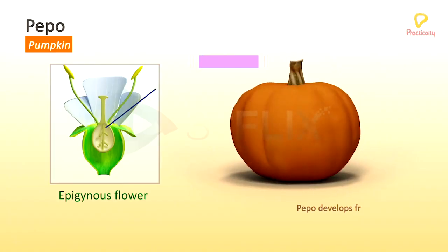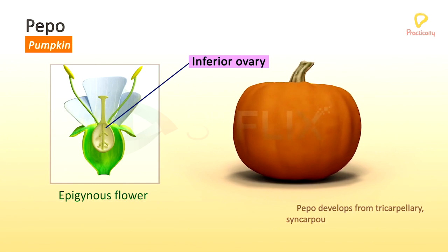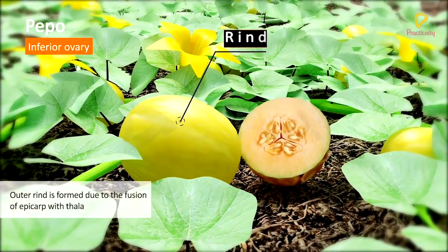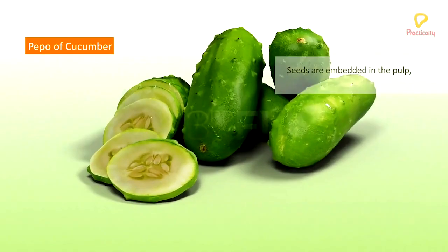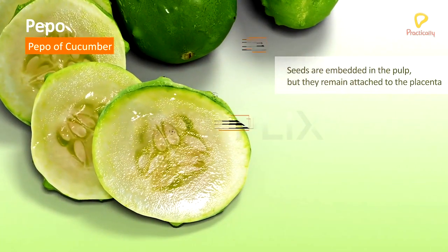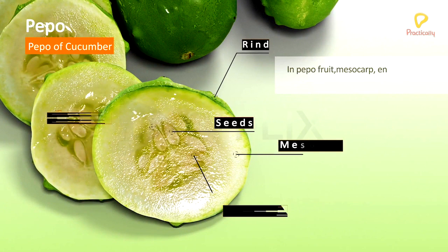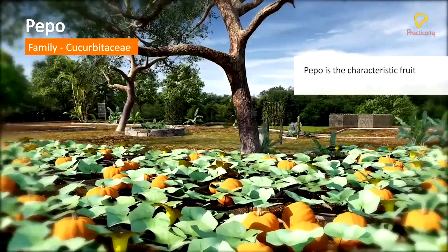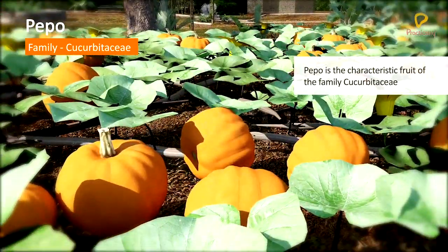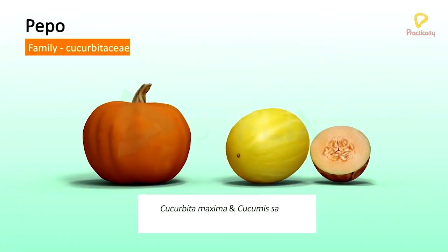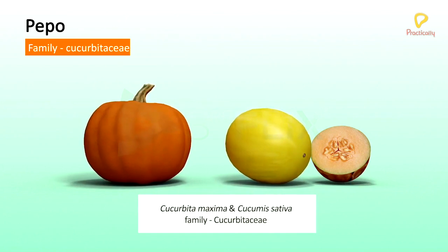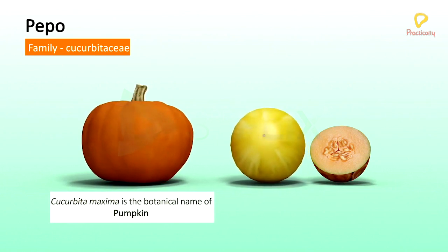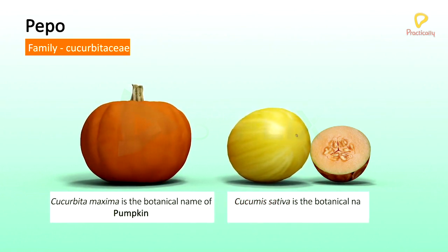Pepo. Pepo develops from tricarpellary, syncarpous, unilocular, inferior ovary. Epicarp and thalamus are fused to form the outer rind. Seeds are embedded in the pulp, but they remain attached to the placenta. In Pepo, the mesocarp, endocarp, and placenta are the edible parts. Pepo is the characteristic fruit of the family Cucurbitaceae. Cucurbita maxima and Cucumis sativus are members of the family Cucurbitaceae. Cucurbita maxima is the botanical name of pumpkin, and Cucumis sativus is the botanical name of cucumber.